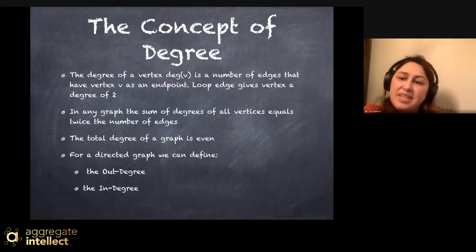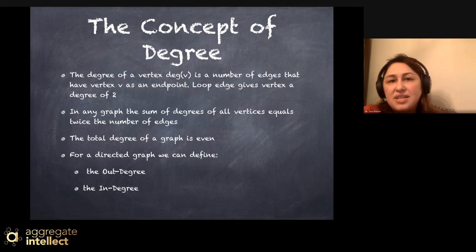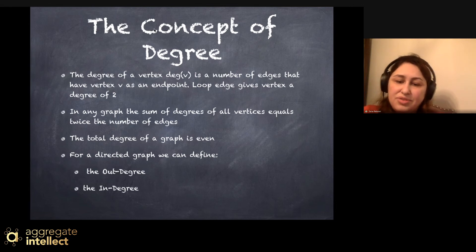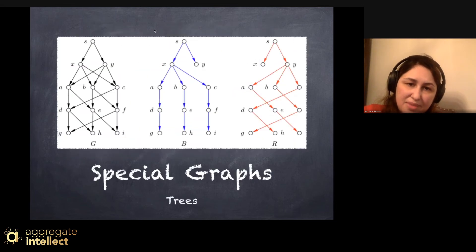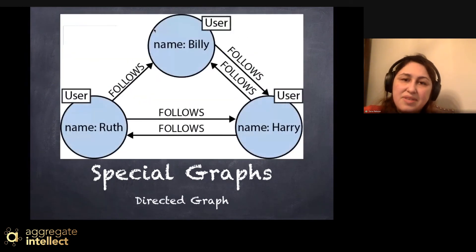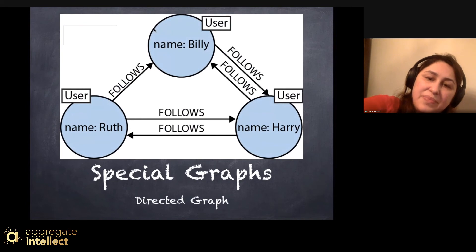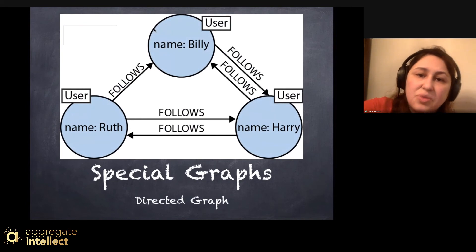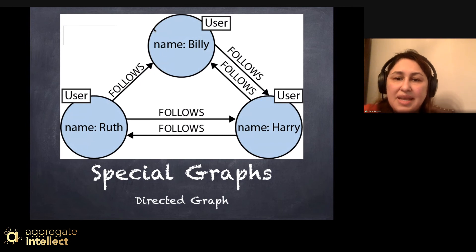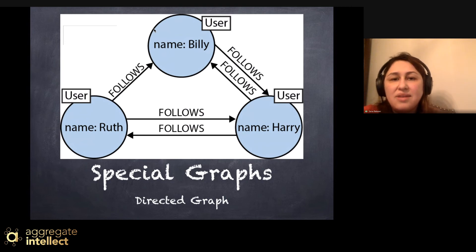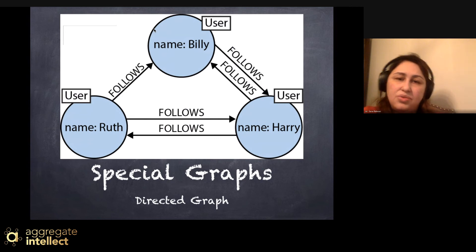The total degree of a graph is always even, because for each edge there are two ends. For directed graphs, you can define out-degree and in-degree. Out-degree is the number of edges going out of a node. For example, Harry has an out-degree of two because two edges go out from Harry's node, and an in-degree of two because two edges come towards Harry.